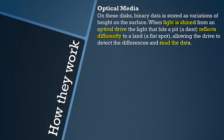I believe a dent represents zero because the light doesn't get reflected back properly — it reflects at a strange angle and won't hit the optical drive, so that represents zero. When the light gets reflected back into the drive, that represents a one. So that's binary, and a CPU can deduce what the data is from that.